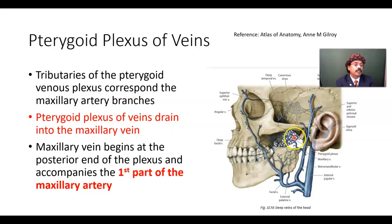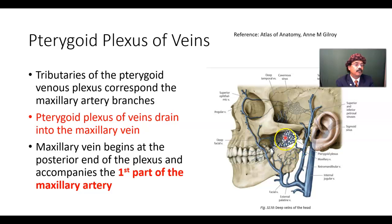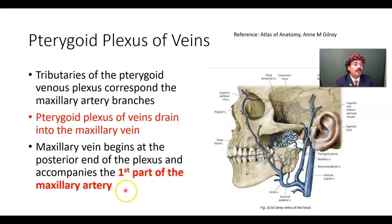The pterygoid plexus of veins drains into the maxillary vein. The maxillary vein is here, and this part accompanies the first part of the maxillary artery. Because this is a plexus, but the maxillary artery is not a plexus — the maxillary artery has three parts. The maxillary vein begins at the posterior end of the pterygoid plexus of veins and accompanies the first part of the maxillary artery.